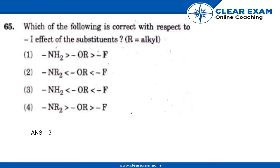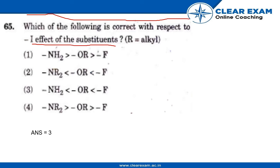Hello everyone. Today in this lecture we will be solving question number 65. The question is: which of the following is correct with respect to minus inductive effect of substituents, where R is equal to alkyl? The four options are: (1) NH2 > OR > F, (2) NR2 < OR and OR < F, (3) NH2 < OR and OR < F, and (4) NR2 > OR and OR > F.